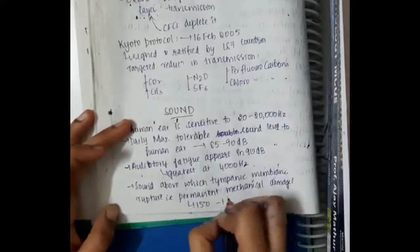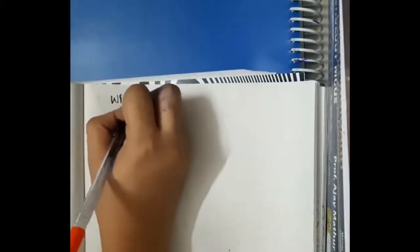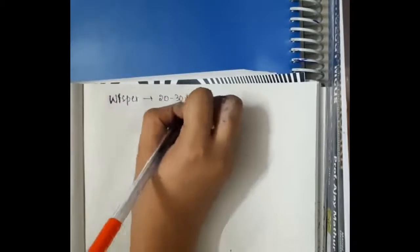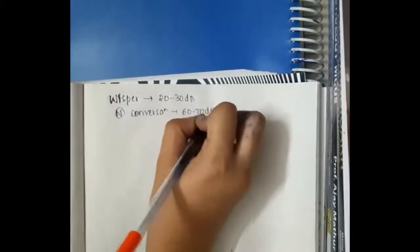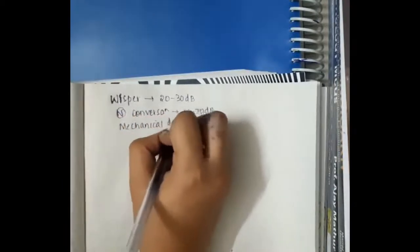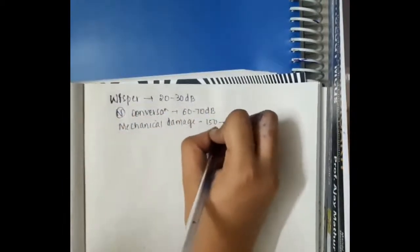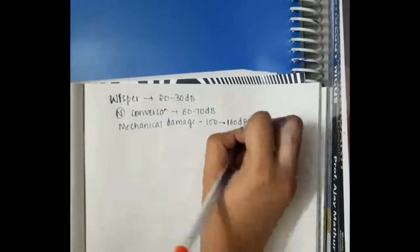150 to 160 dB damage will occur. Then whisper constitutes 20 to 30 dB. Normal conversation constitutes 60 to 70 dB. Mechanical damage constitutes 150 to 160 dB.